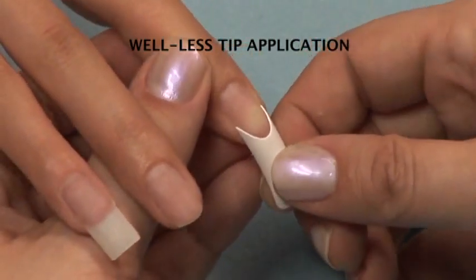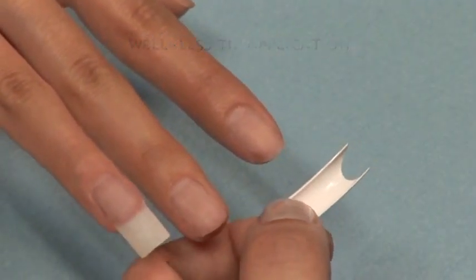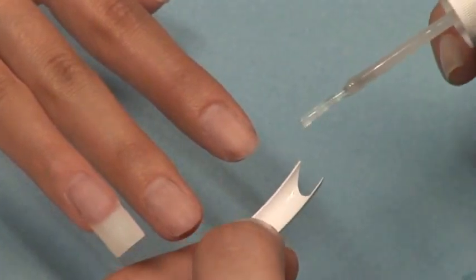For a half-well tip or well-less tip, we are using the Deep Smile French tip. Apply a small amount of resin at the very smile of the tip.